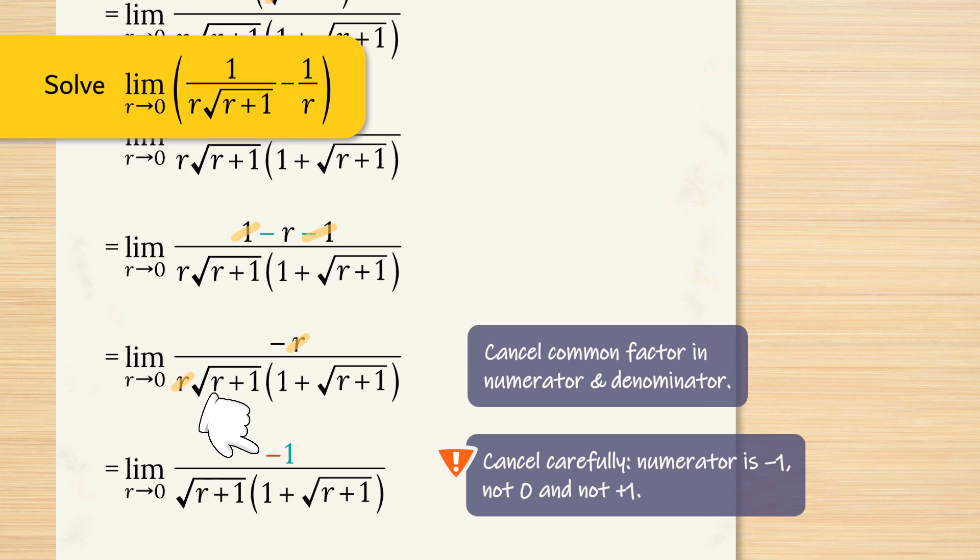A negative 1. It's not a plus 1. We just have those two factors multiplied together. Square root of r plus 1 multiplied by 1 plus the square root of r plus 1.